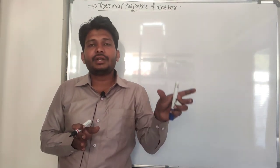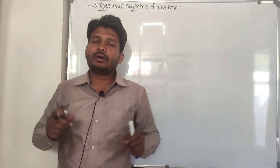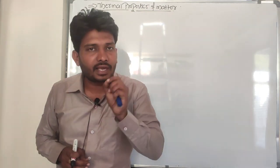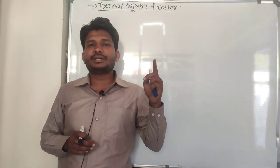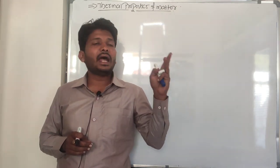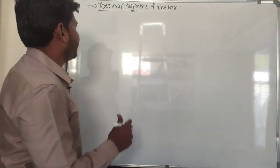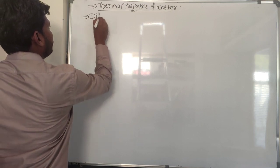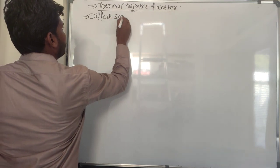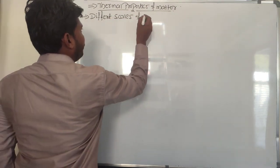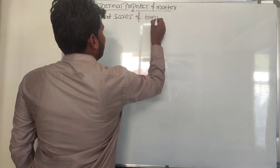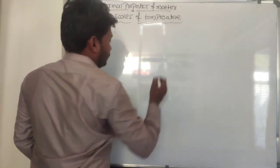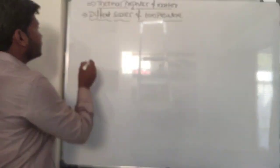Temperature means it measures the degree of hotness or coldness of a body. In order to measure the temperature, we have different scales. Mainly we can consider the Celsius scale, the Fahrenheit scale, and the Kelvin scale. Let's look at these different scales of temperature.